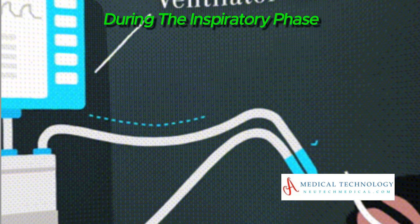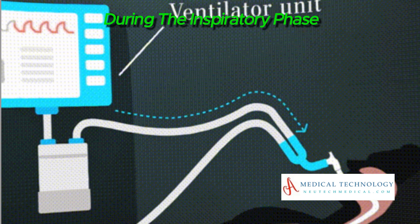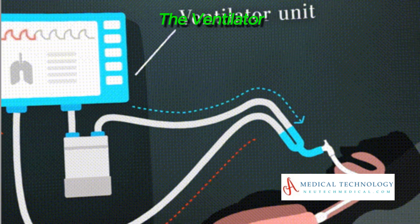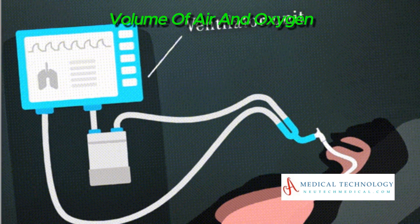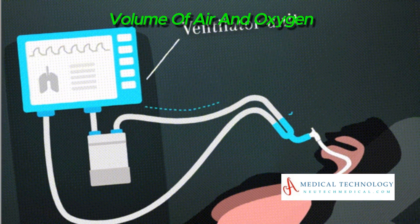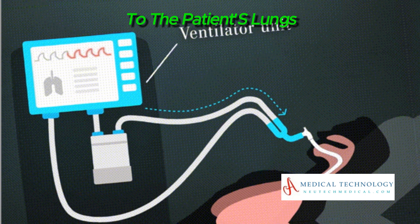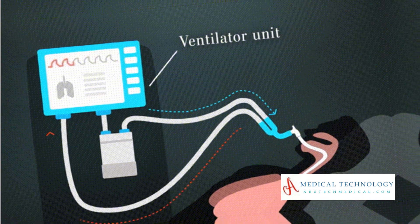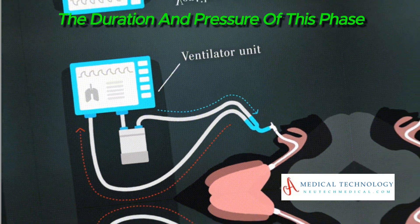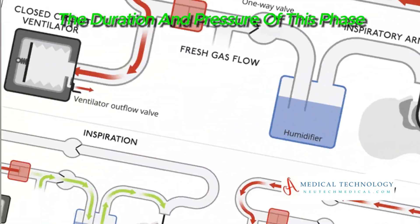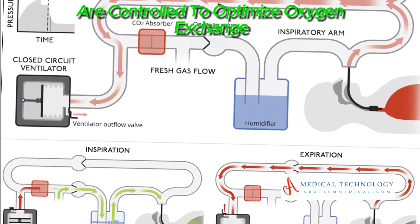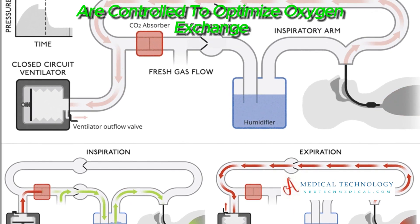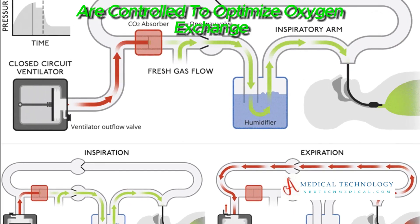During the inspiratory phase, the ventilator delivers the predetermined tidal volume of air and oxygen to the patient's lungs. The duration and pressure of this phase are controlled to optimize oxygen exchange.